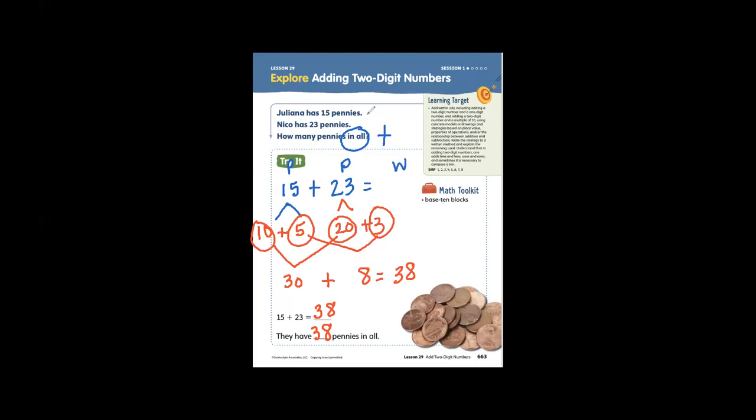Another way to look at this problem is to draw out your tens and ones. If you have the number 15 and 23 and you are going to add them together, you can label your tens and your ones.